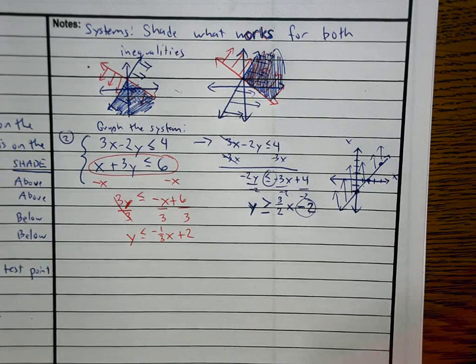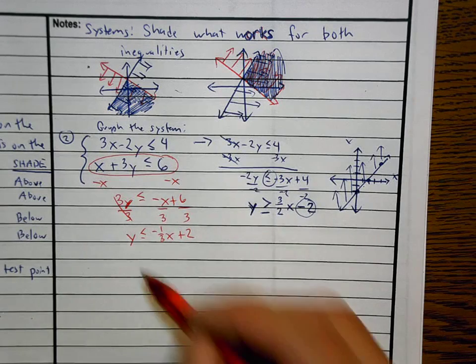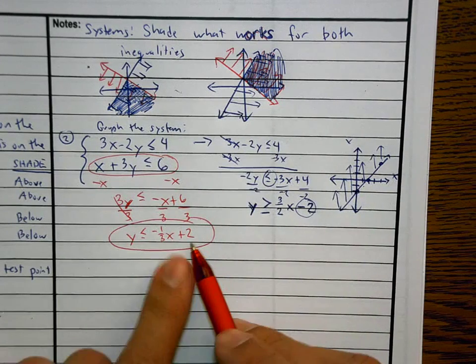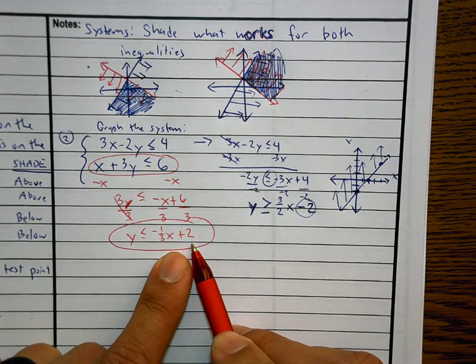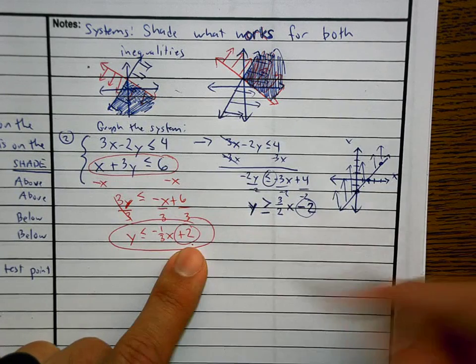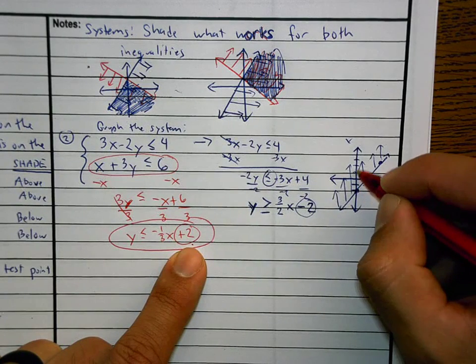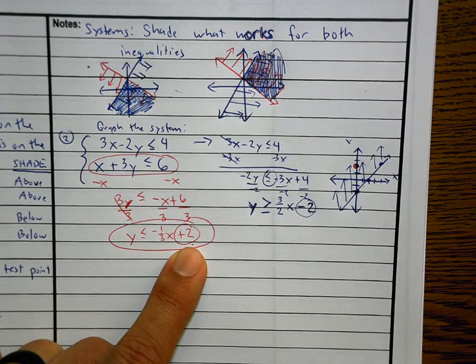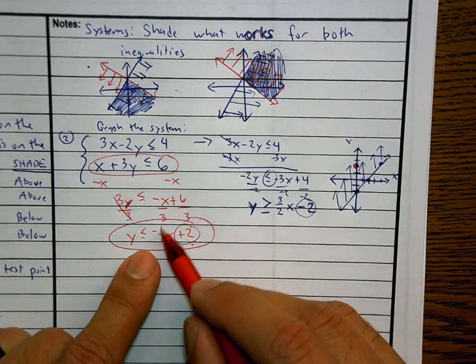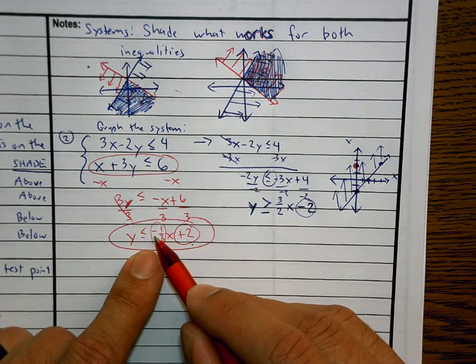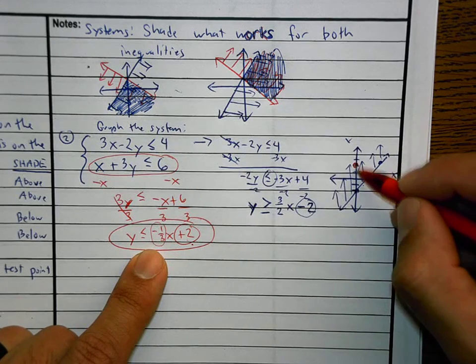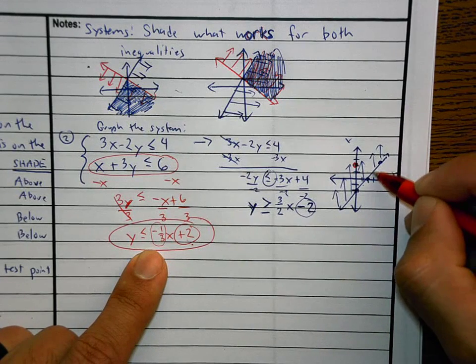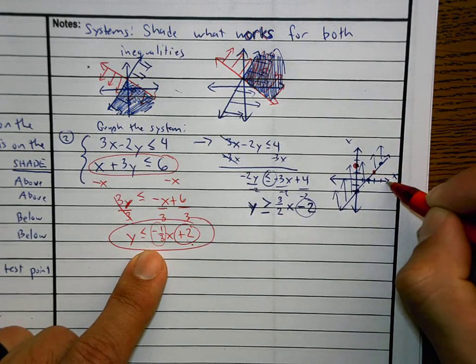Then I go to my red line's graph. I know what my y-intercept is here. My y-intercept is up 2. I make a dot. From that y-intercept I use the slope. Negative 1 third means down 1 over 3, down 1 over 3.